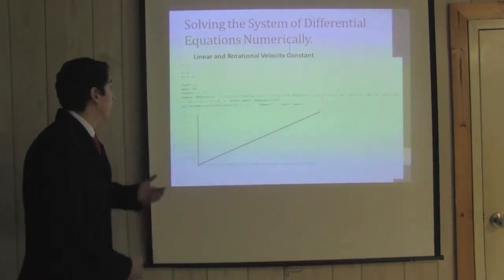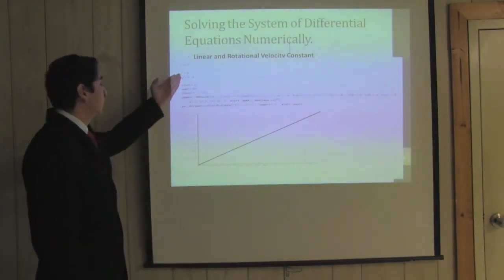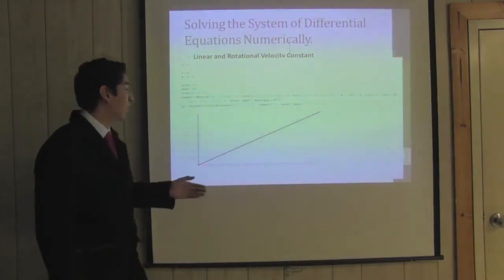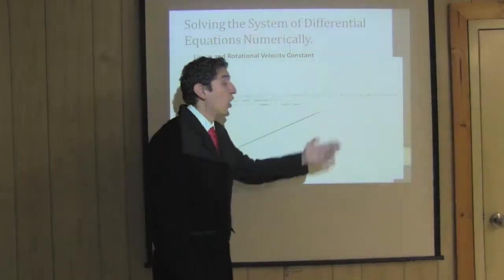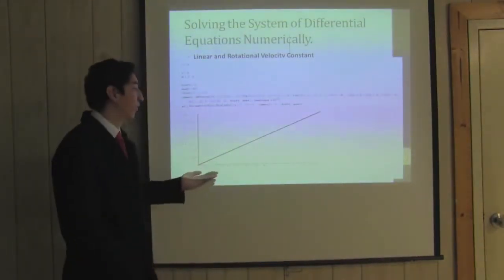For example, when the linear velocity is equal to 3 cm per second, starting from the origin and letting theta equal zero, we could move the robot in a straight direction.